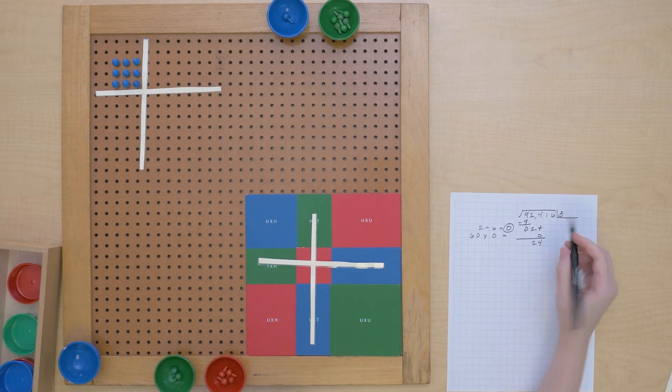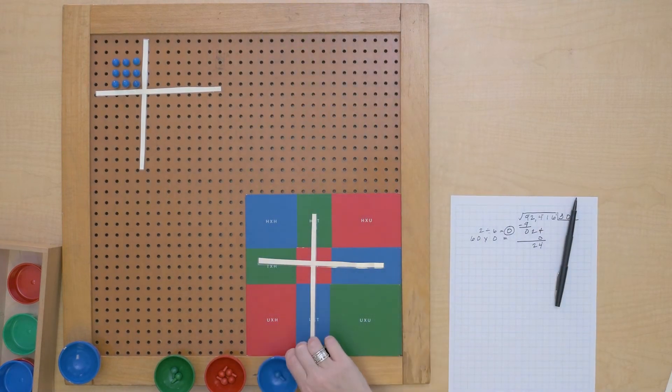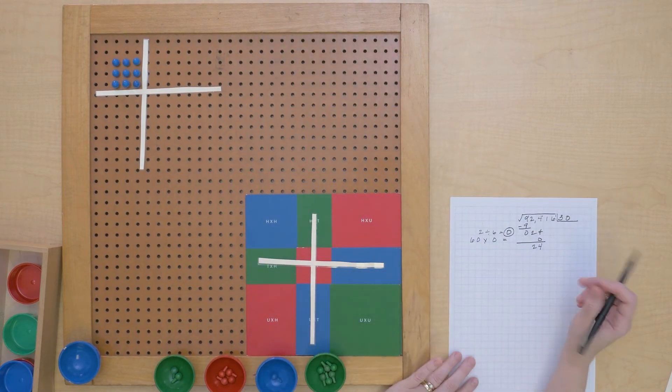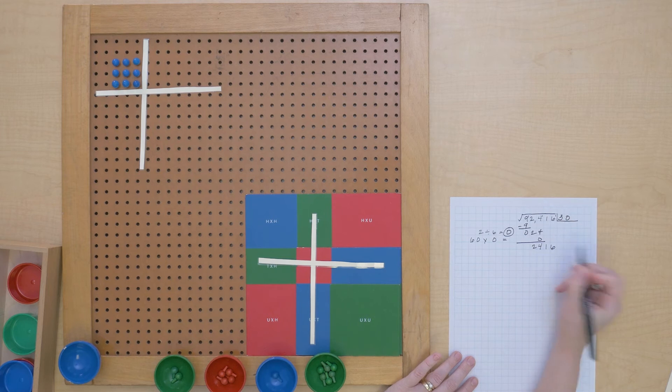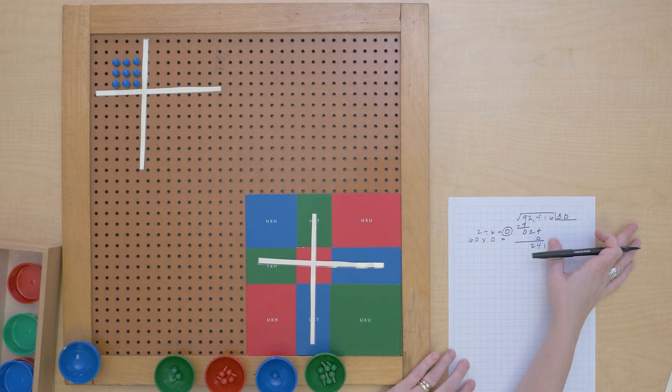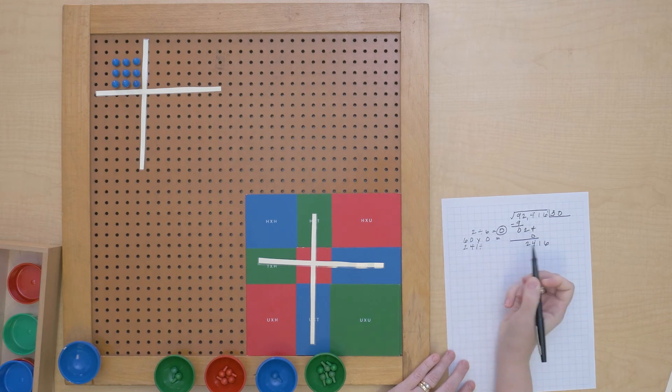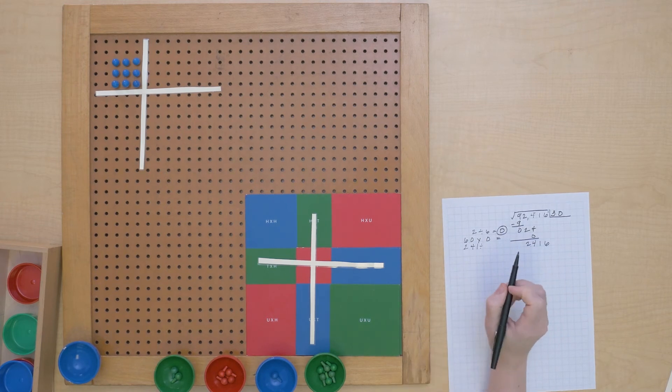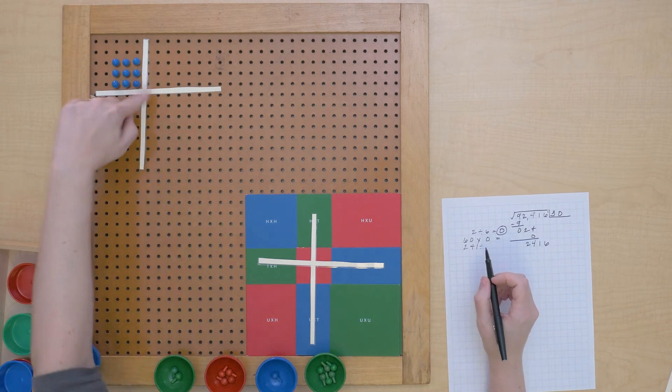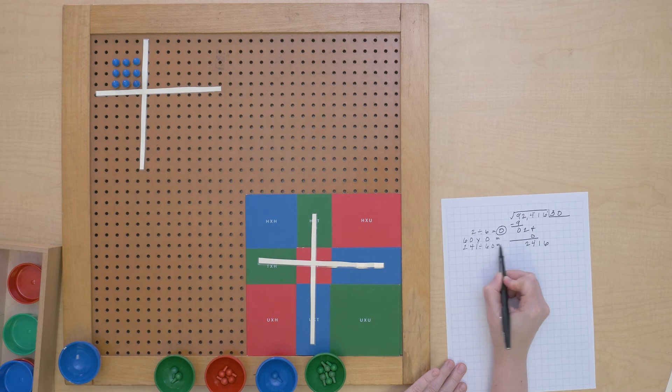So indeed our trial root is zero and we can bring down our next period. That means we're going to have 241 to use to build our rectangles and we're going to divide that by 60.